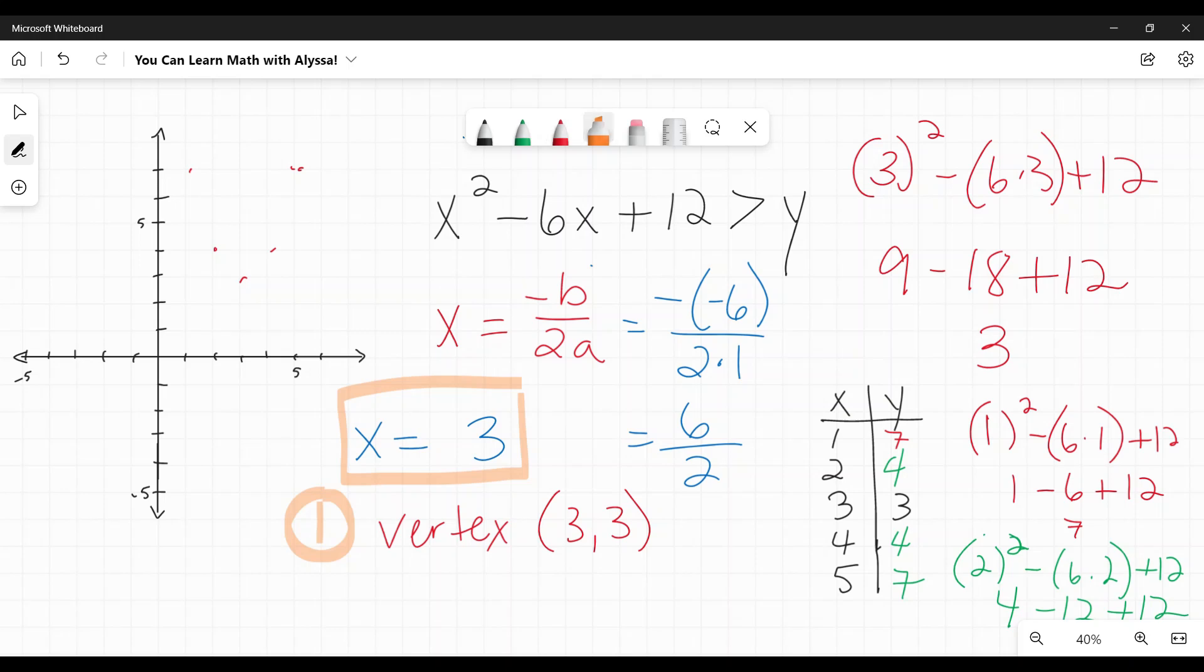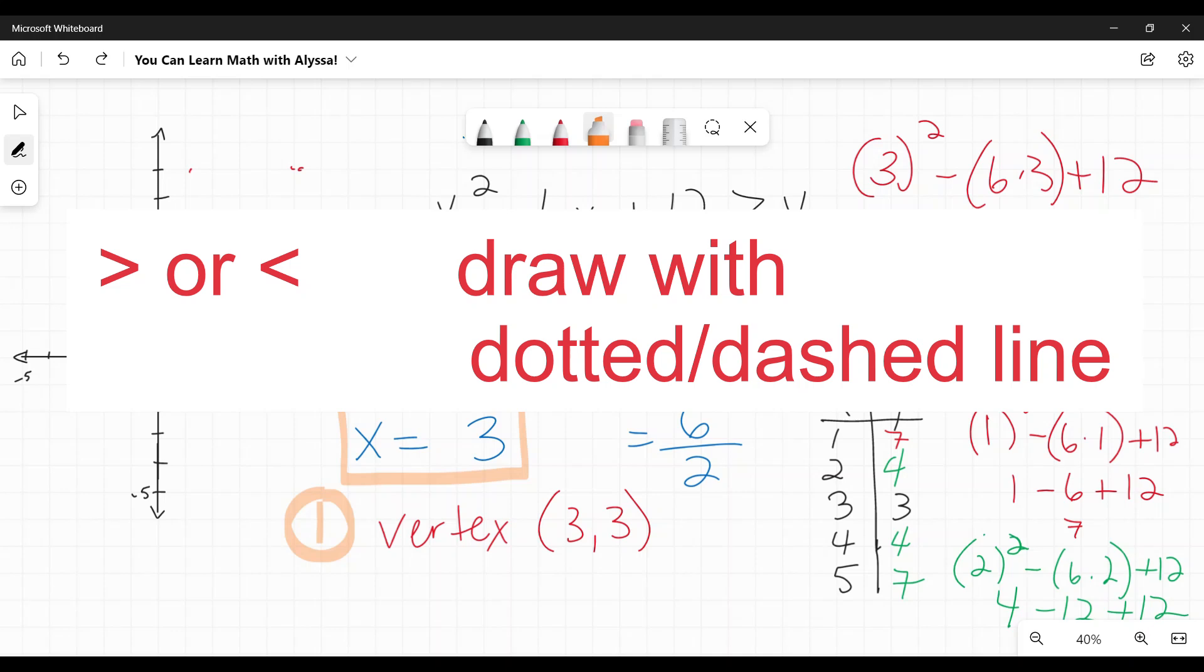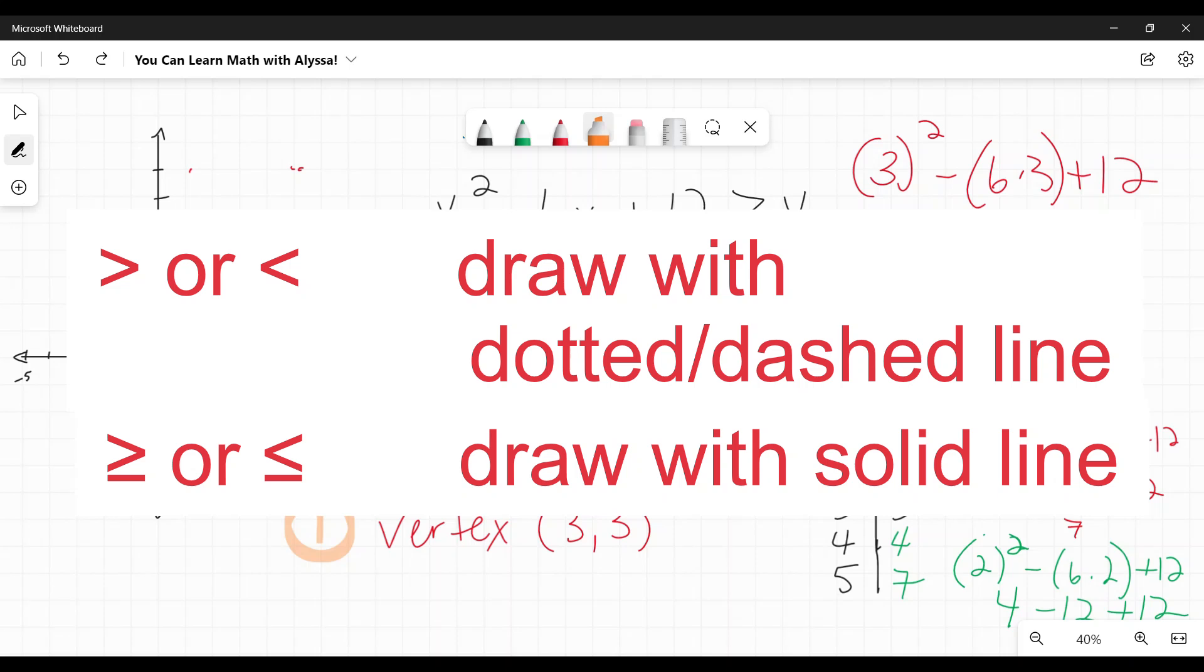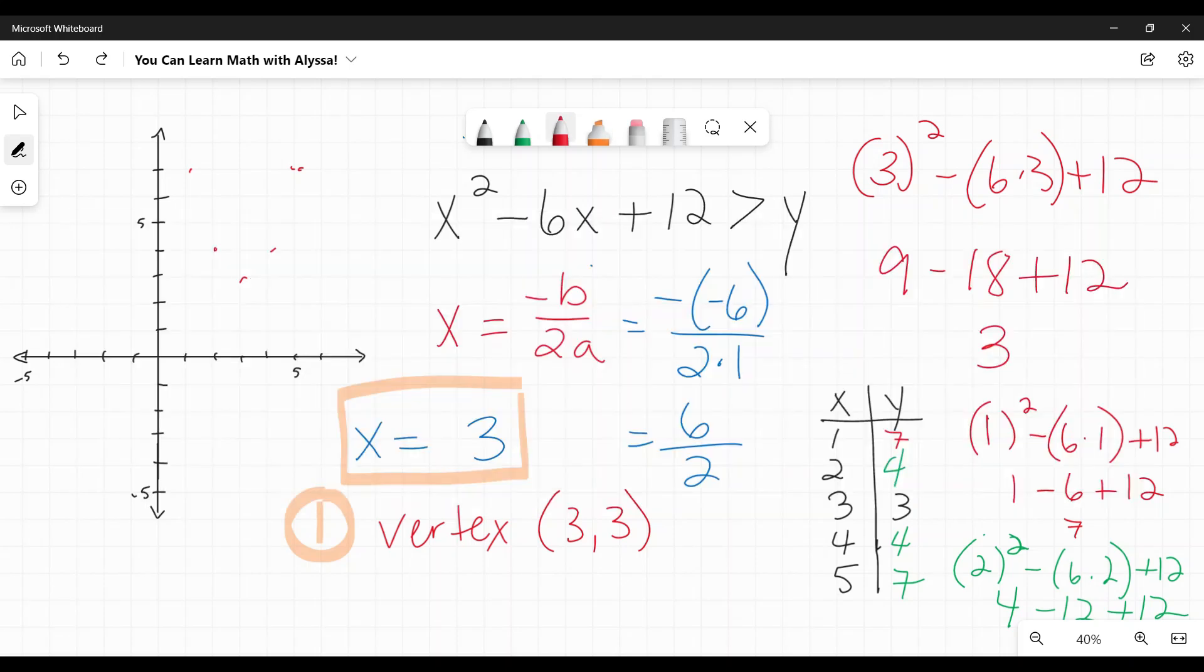Now, if this had been a normal, I say normal, an example of one you'd done before where it was equals y, you would, at this point, just draw a nice little solid line and you'd be done. You'd have graphed this parabola. Well, there's one more step to go in the graphing part before we get to the shading. And the graphing part, we need to decide whether this is going to be a solid or dotted line parabola. And the way we determine that is by looking right here at this sign. The rule is, if it is greater than or less than, you draw with a dotted line or dashed line. If it is greater than or equal to or less than or equal to, you draw it with a solid line.